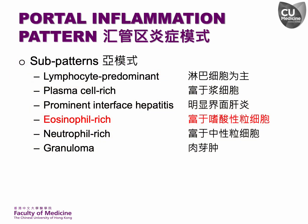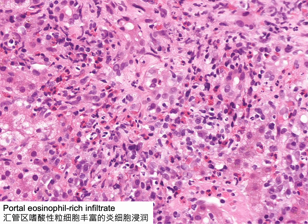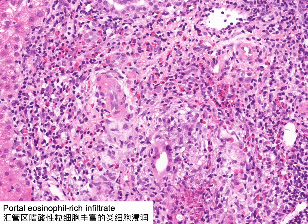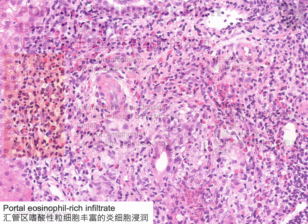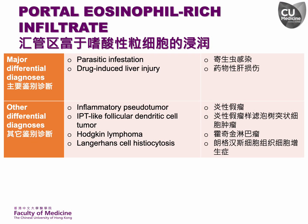Eosinophil-rich inflammation is the next sub-pattern of portal inflammation we're going to discuss. This portal tract is expanded by an inflammatory infiltrate that includes a significant number of eosinophils. Another example highlights a substantial number of eosinophils within the portal inflammatory infiltrate.